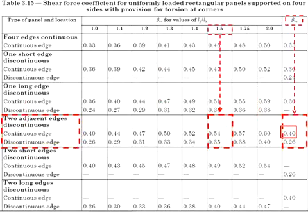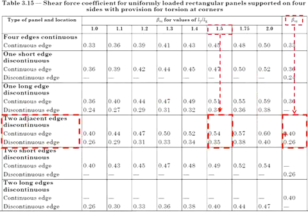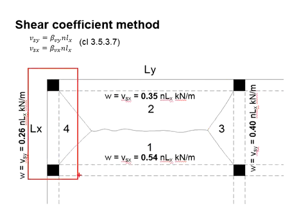0.4 is for the continuous edge of the shorter span. Therefore, it is continuous for a shorter span, this span. As for 0.26, it is referring to shorter span discontinuous, which is this side.